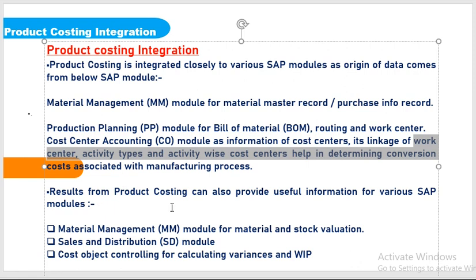The results from product costing can also provide useful information for various SAP modules. The product costing results are definitely helpful to other modules — helpful to Material Management for material and stock valuation, helpful to the SD module, and useful for cost object controlling for calculation of variances and work-in-progress.